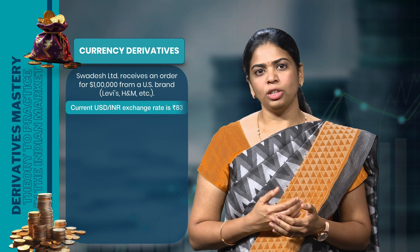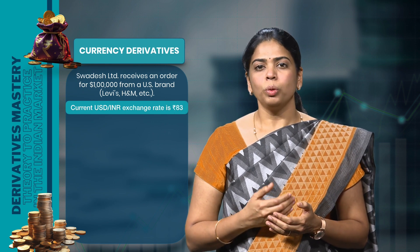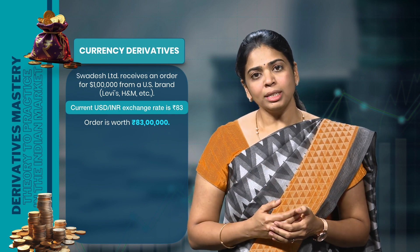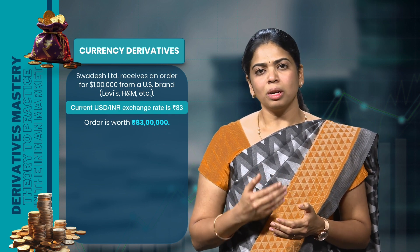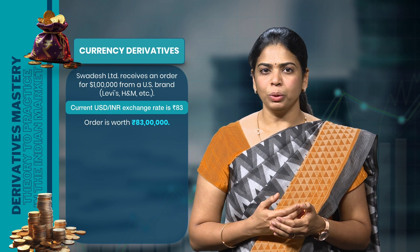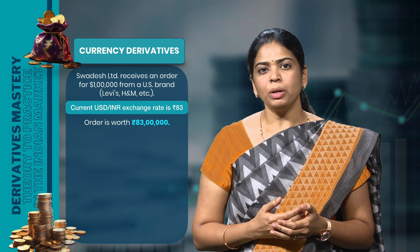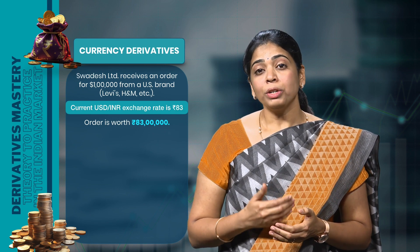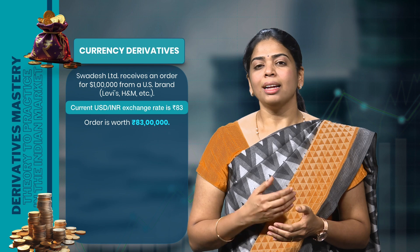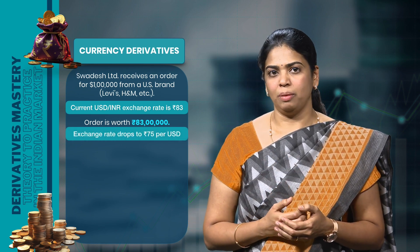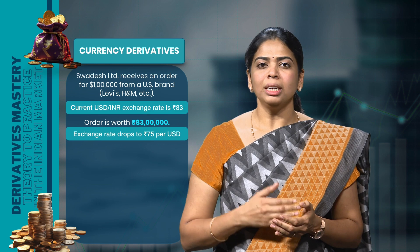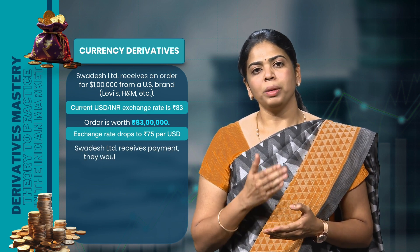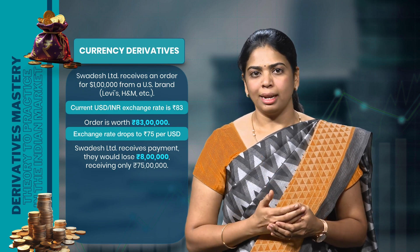The current USD to INR exchange rate is Rs.83, which means this order is valued at Rs.83 lakhs. It will take Swadesh Limited 3 months to complete the manufacturing and ship the goods, and they will receive the payment of 1 lakh US dollars after this time. What if the rupee value appreciates and the exchange rate falls to Rs.75 per USD? When the company converts 1 lakh US dollars into INR, they would receive only Rs.75 lakhs, leading to a loss of Rs.8 lakhs.